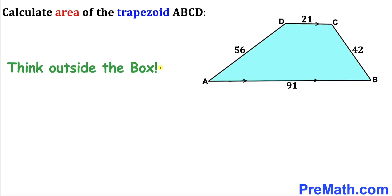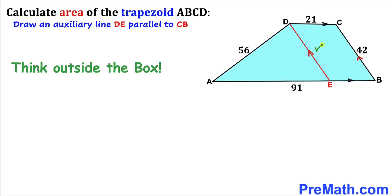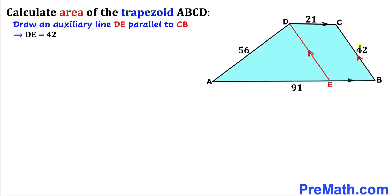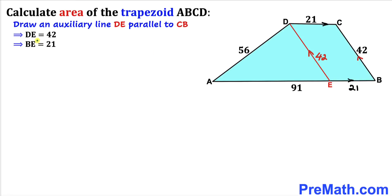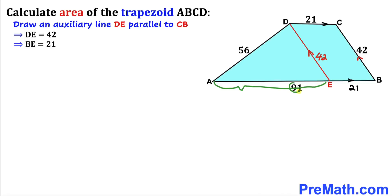We are going to think outside the box. We draw auxiliary line DE that is parallel to line CB. Since CB is 42 units, side length DE is 42 units as well. Now, since we are dealing with parallelogram EBCD, if side CD is 21 units then side EB is 21 units as well. We know the whole side AB is 91 units and EB is 21 units, so AE equals 91 minus 21, which gives us 70 units.